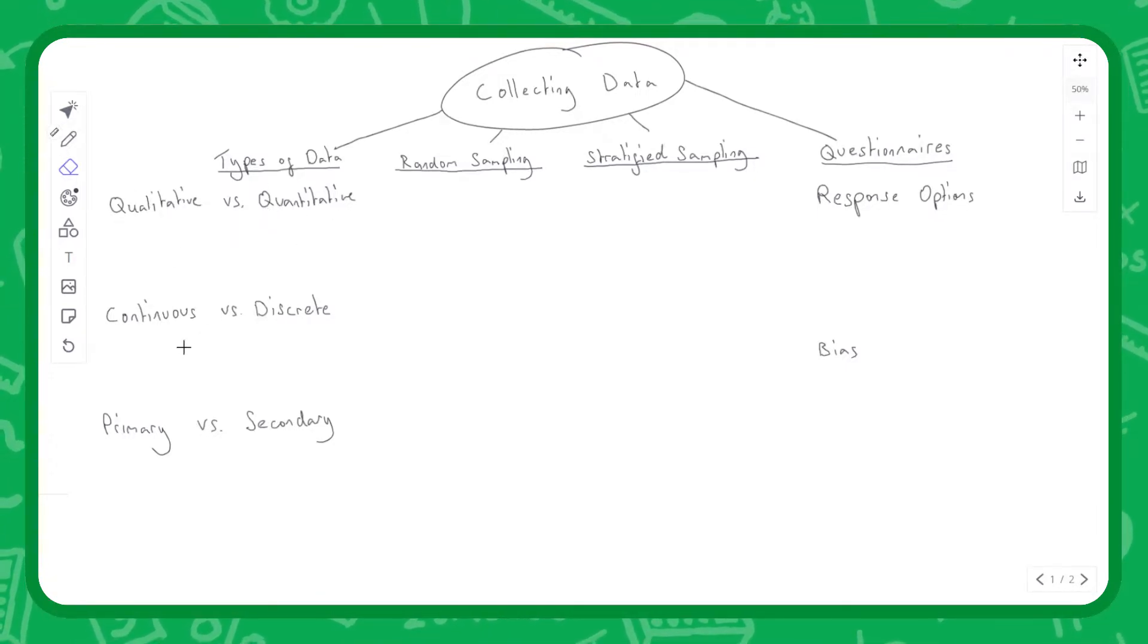Moving on to continuous and discrete types of data. This way of categorizing data is slightly different. Continuous means we can continue to get more and more precise with our measurements, for example, the length of a piece of string or someone's height.